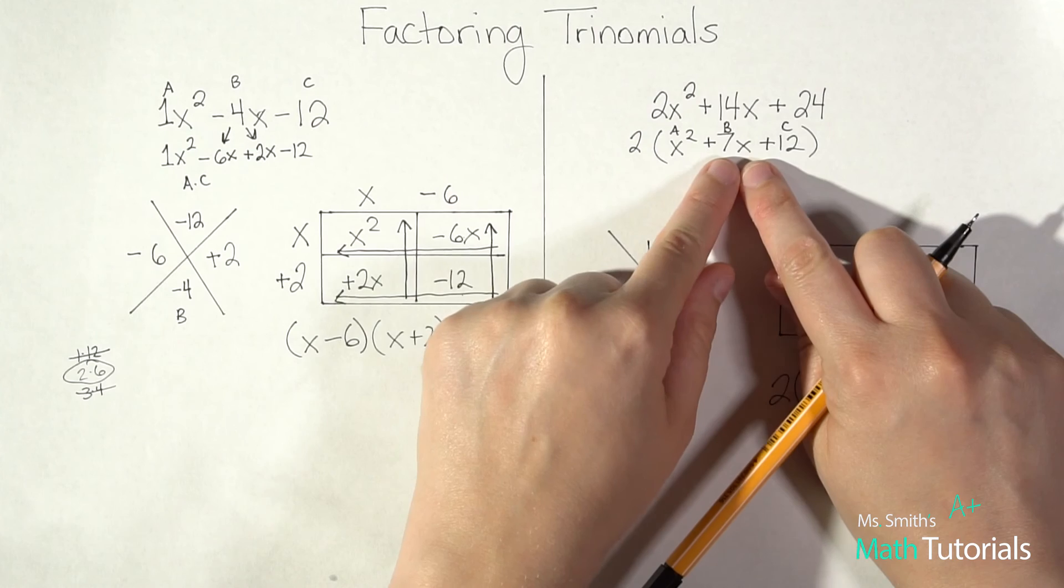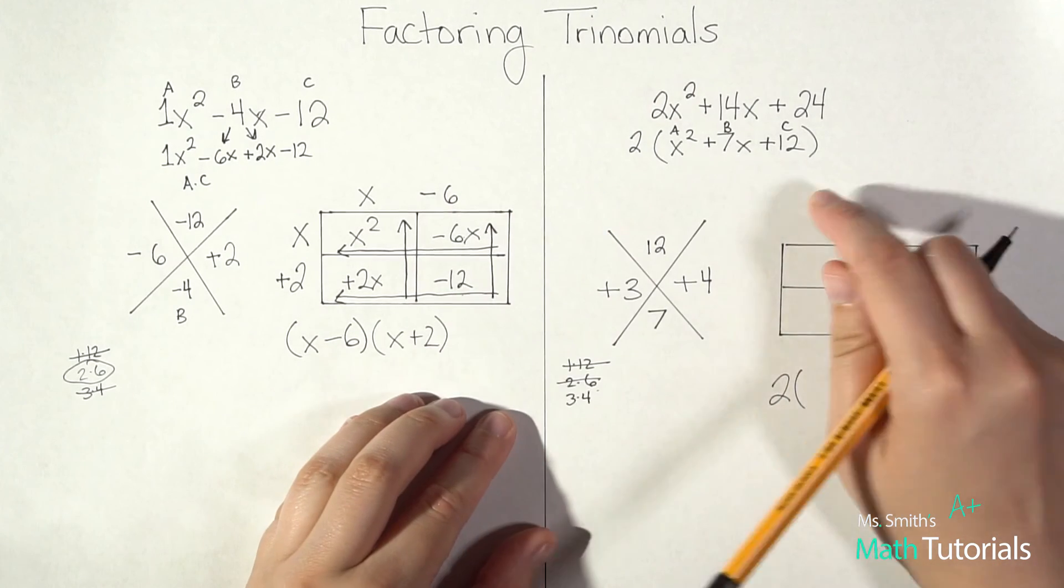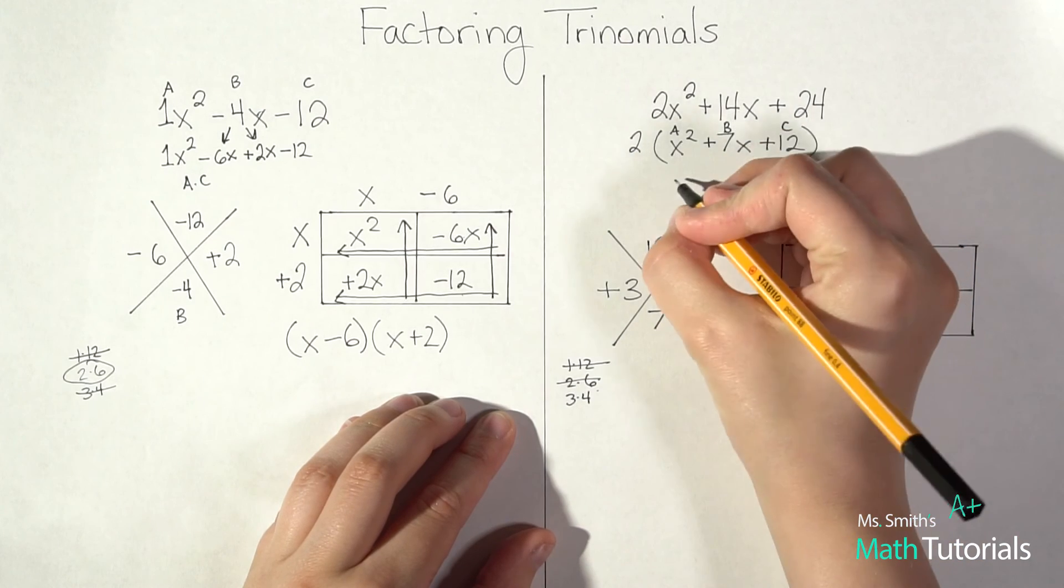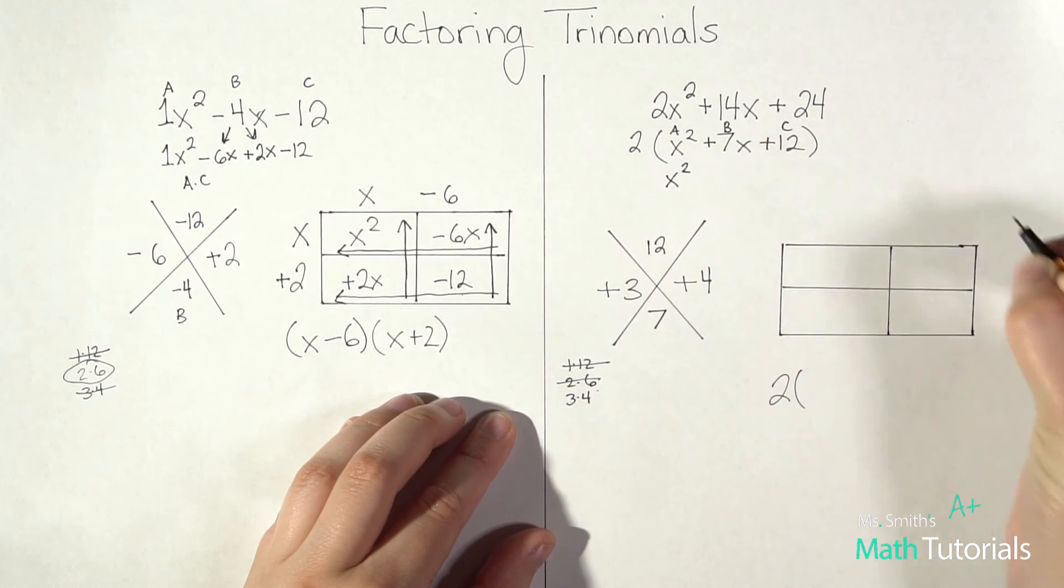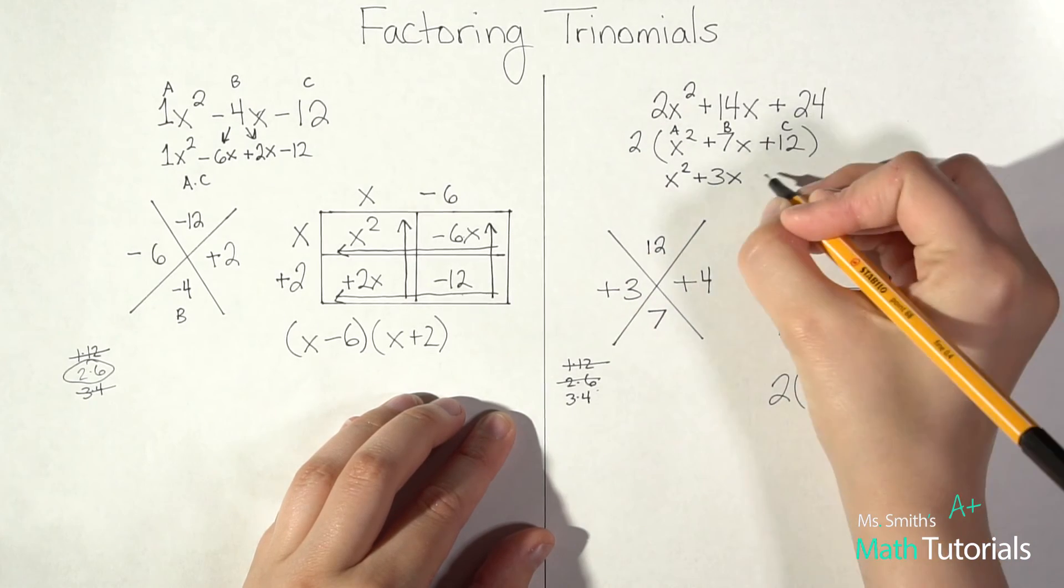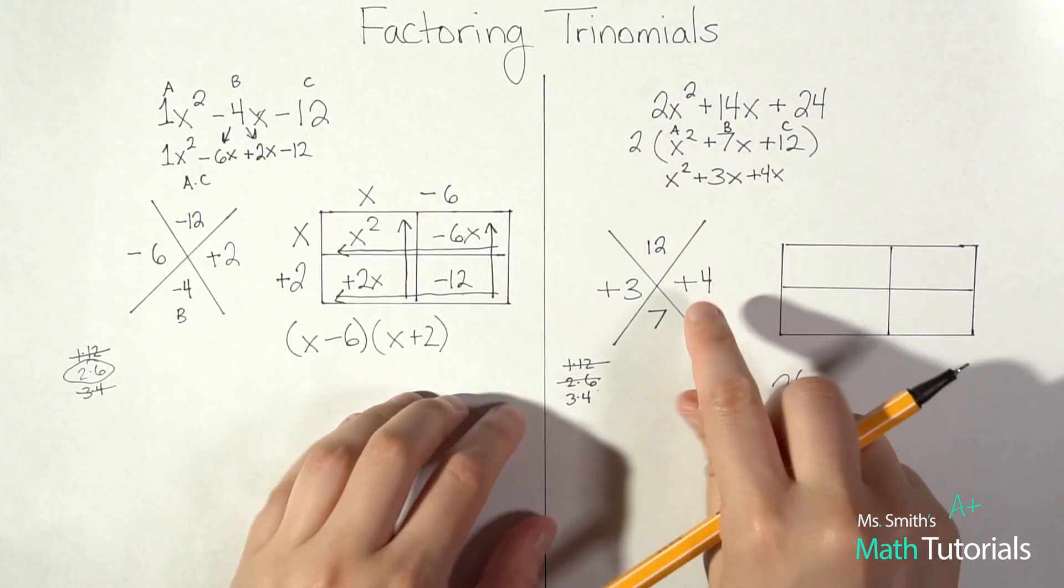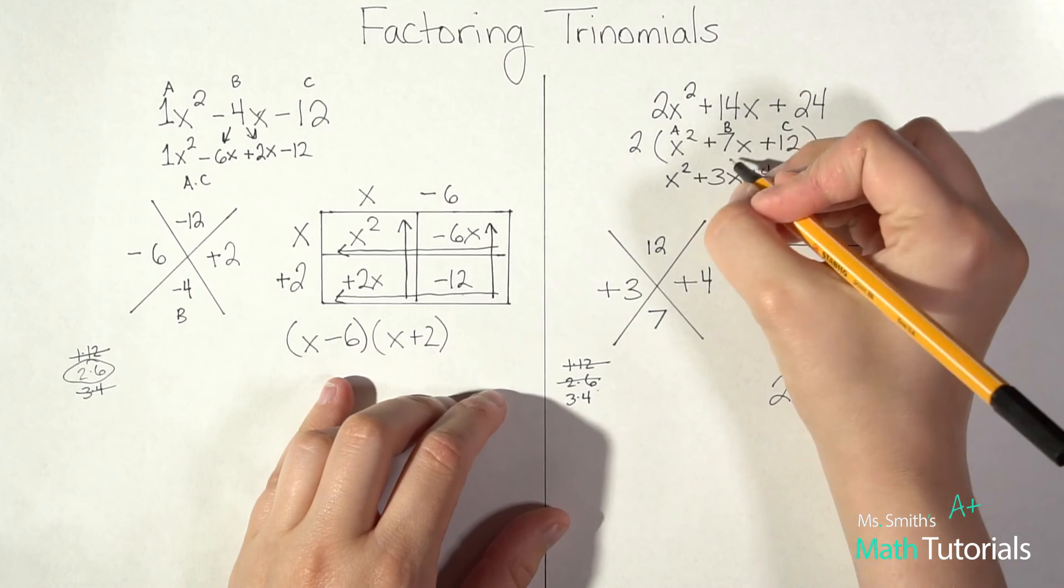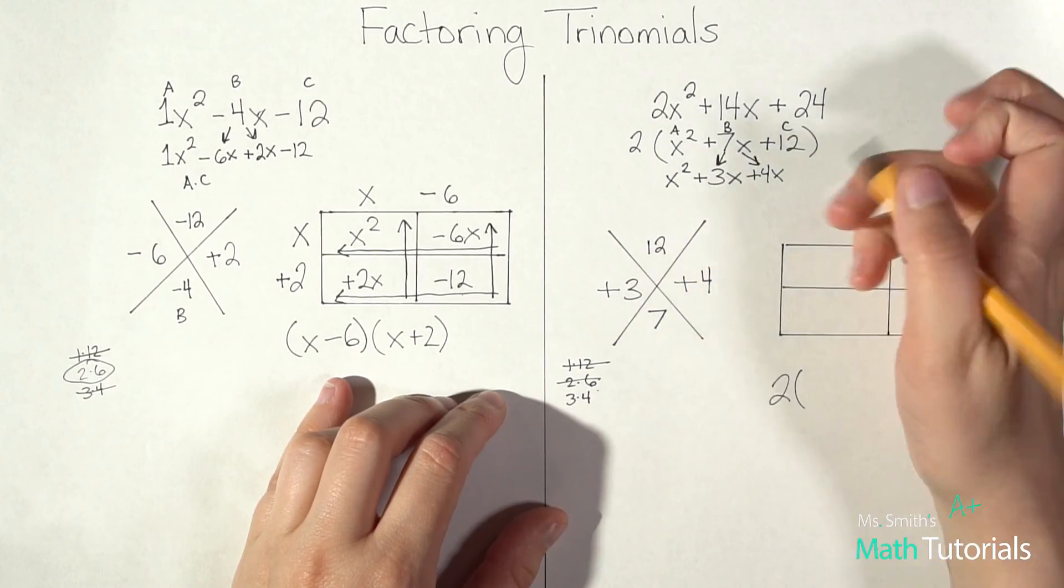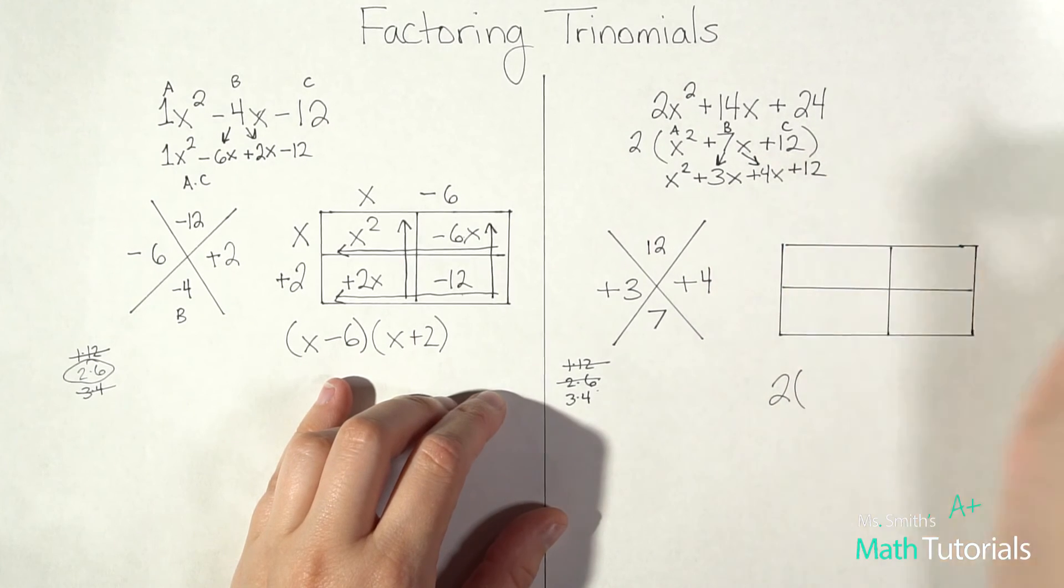So I'm going to come up here and turn this trinomial into a four-term problem so that I can go ahead with that box. So remember our A value stays the same. Then we've got a positive 3x, positive 4x. It's this B value splitting in two. Don't forget to include your x's. And my C value stays the same.